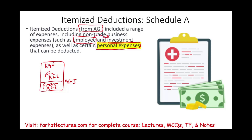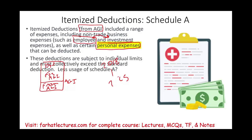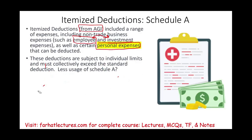Employee and investment deductions are suspended from 2018 to 2025. So what we are left with is other itemized deductions, other than employee and investment deductions. These deductions are subject to individual limits and must collectively exceed the standard deduction.